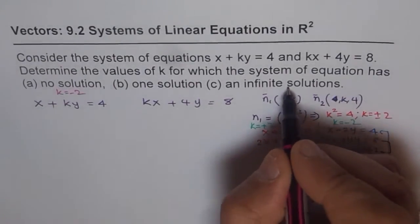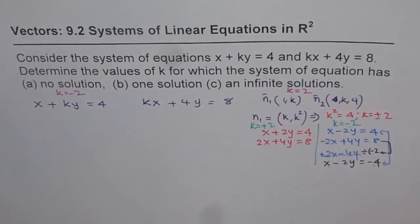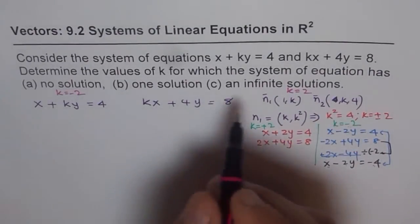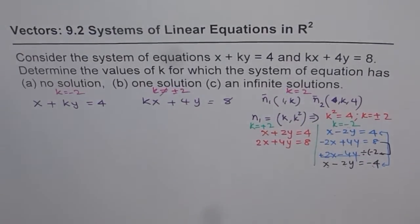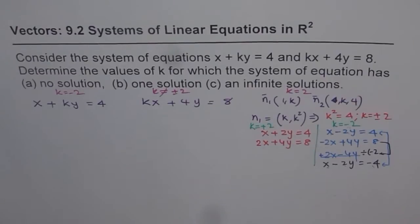And infinite number of solutions for k equals 2. And obviously, if it is neither of these two, that means when k is not equal to plus minus 2, we have one solution. So that is how we can solve this equation straight away after analyzing the normals. That is one approach to this question.